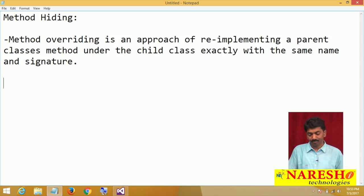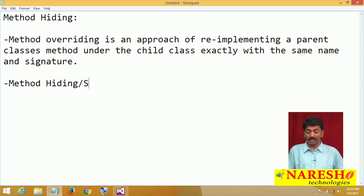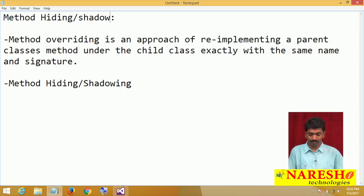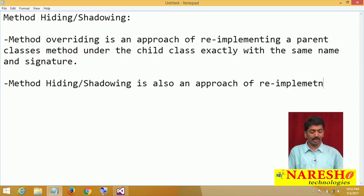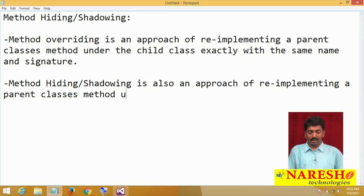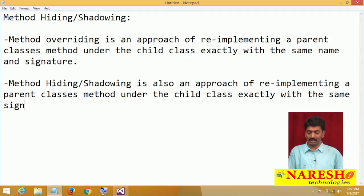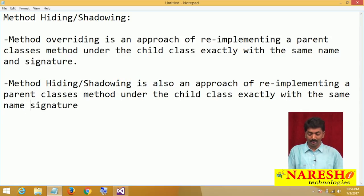Then what is method hiding? Method hiding is also the same. Method hiding, you can also call it as shadowing. Method hiding or shadowing is also an approach of re-implementing a parent class's method under the child class with exactly the same name and signature.